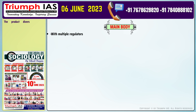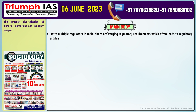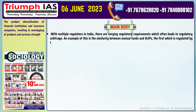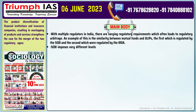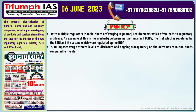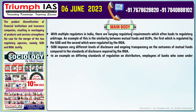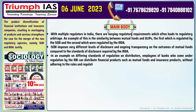Main body, Point 1: With multiple regulators in India, there are varying regulatory requirements which often lead to regulatory arbitrage. An example is the similarity between mutual funds and ULIPs — the first regulated by SEBI and the second by IRDA. Point 2: SEBI imposes very different levels of disclosure and ongoing transparency on mutual funds compared to the standards required by IRDA. Point 3: In an example of differing standards for distributors, employees of banks under RBI regulation can distribute mutual funds and insurance products without adhering to the rules of SEBI and IRDA.